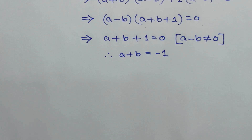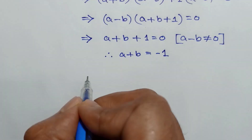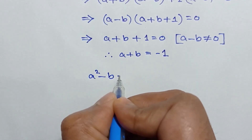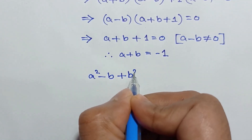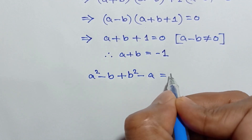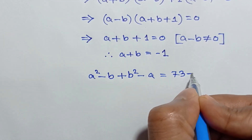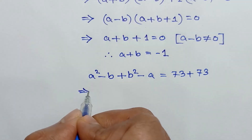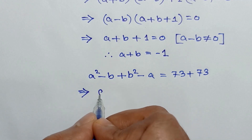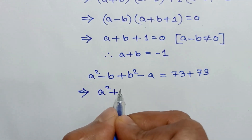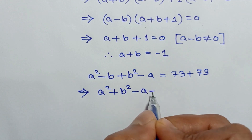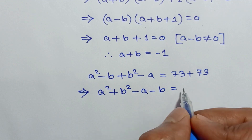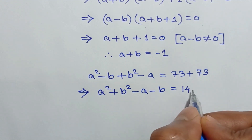Now, adding equation one and equation two, we can write: a² - b + b² - a = 73 + 73. Rearranging the left side gives a² + b² - a - b = 146.